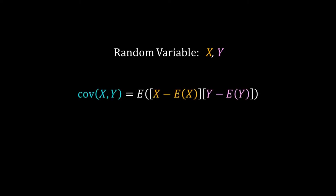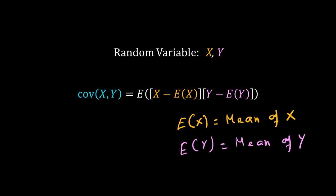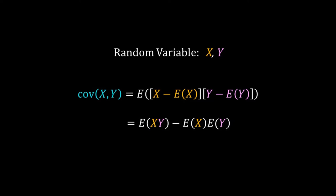Now let's move from one variable to two variables X and Y. For two random variables X and Y, covariance is defined as the expectation of (X minus mean of X) times (Y minus mean of Y). We are multiplying the deviations of X and Y from their respective means and then averaging. Covariance can also be written as expectation of XY minus expectation of X times expectation of Y.